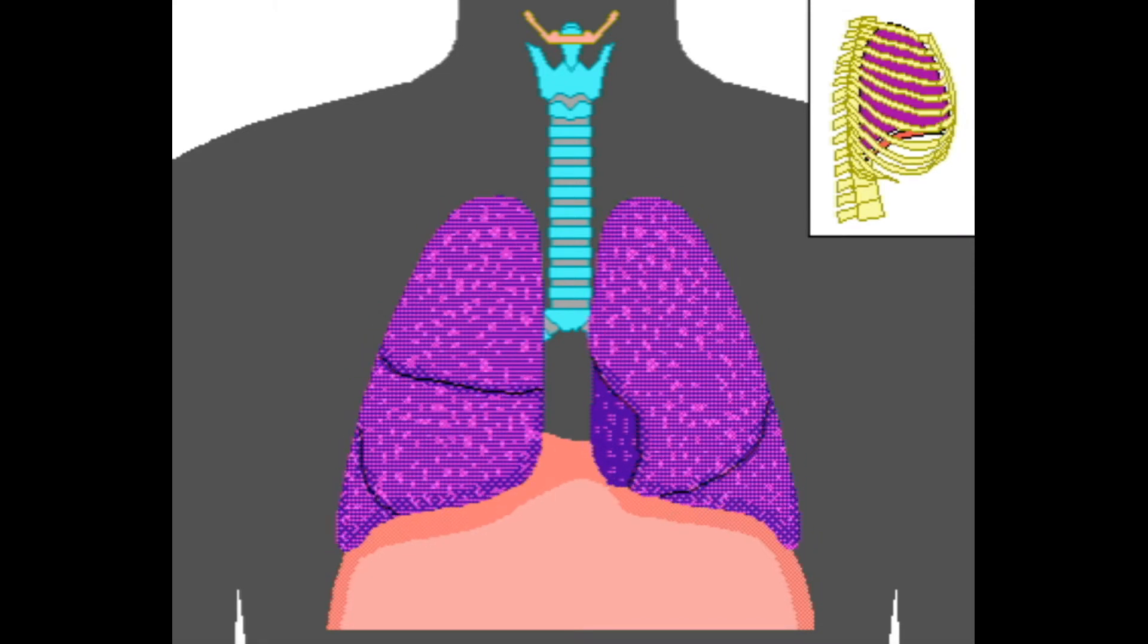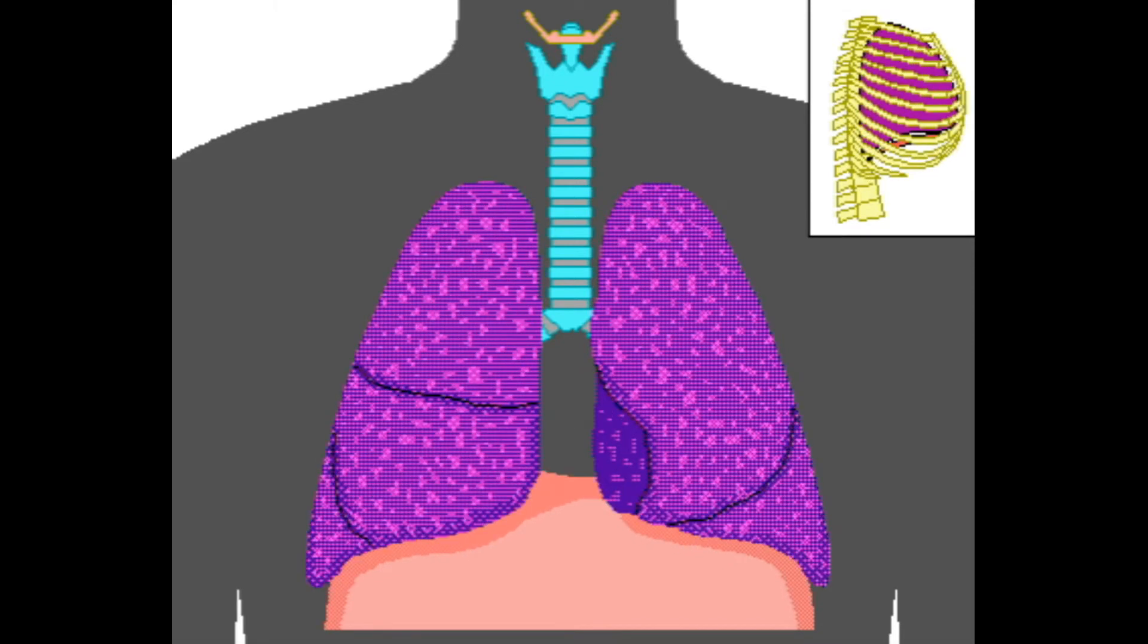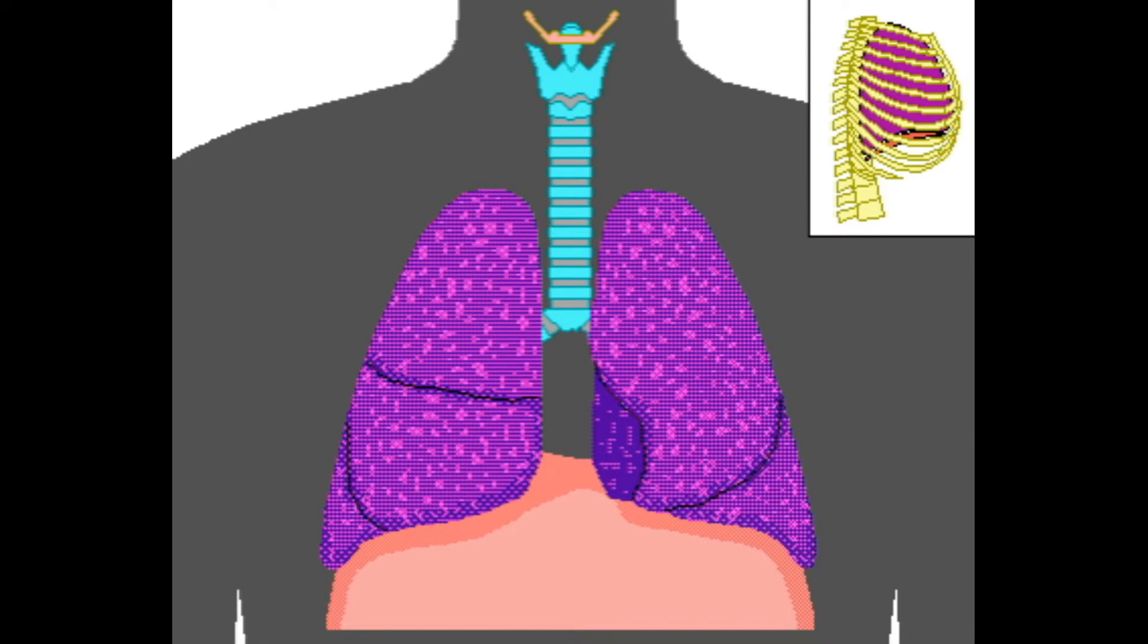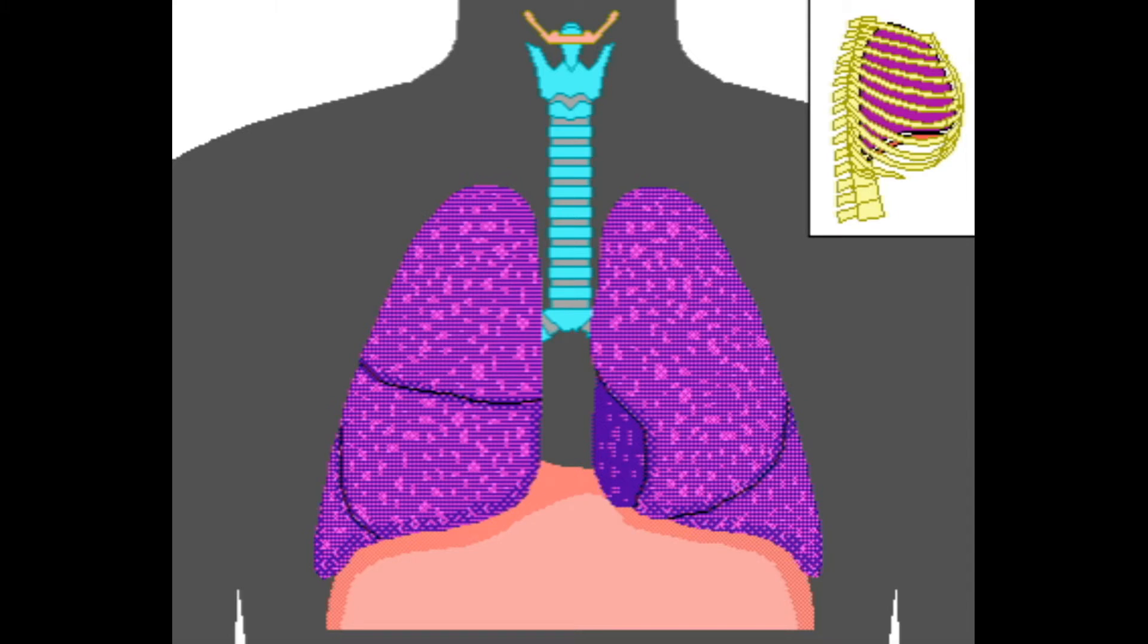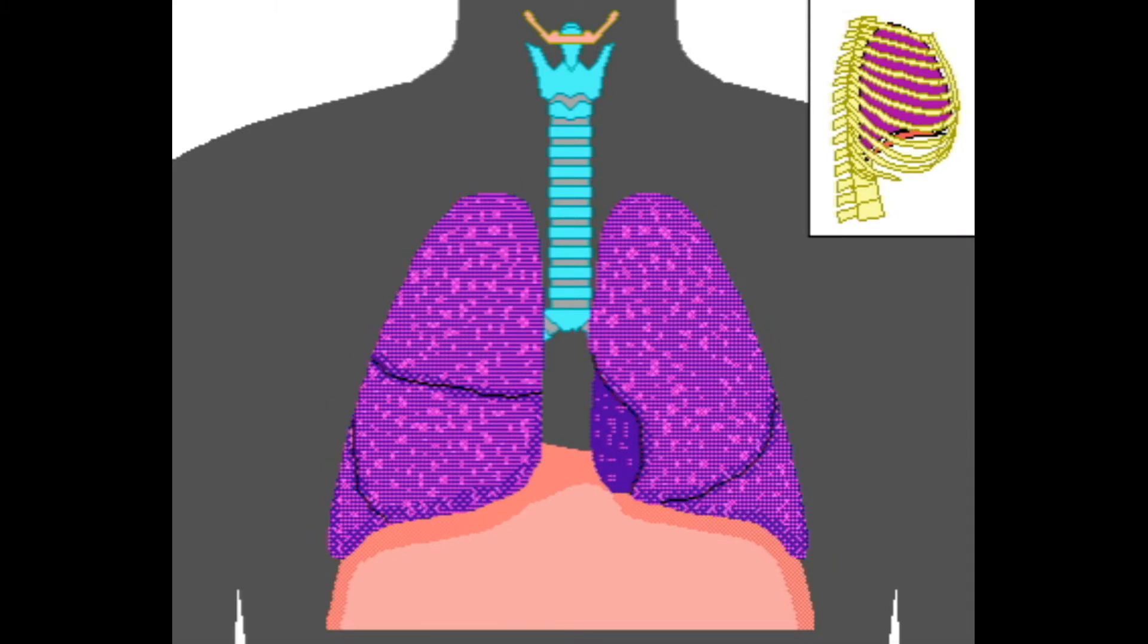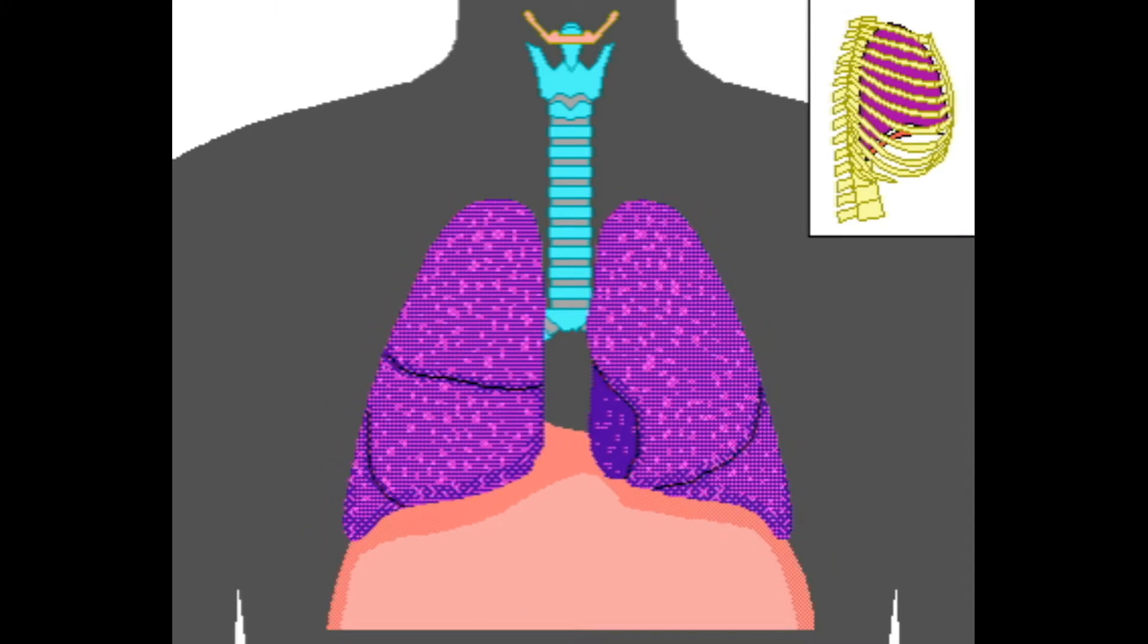The carotid arteries supply blood to the heart, and their afferent nerve fibers pass through the ninth cranial nerve, called the glossopharyngeal cranial nerve, and then to the dorsal respiratory group of neurons in the medulla oblongata.